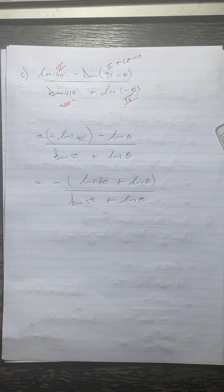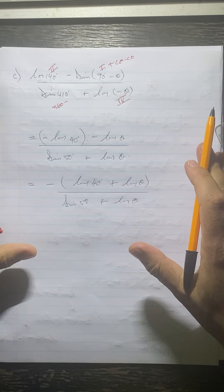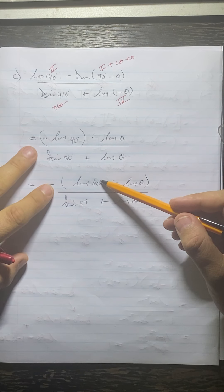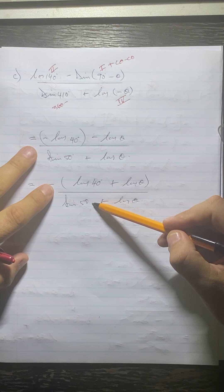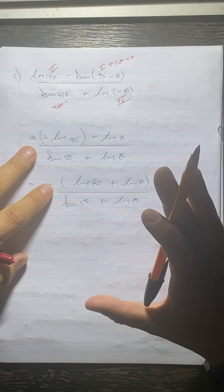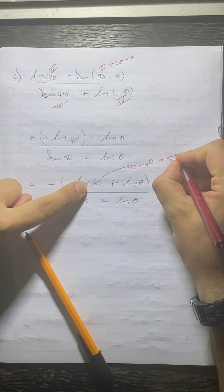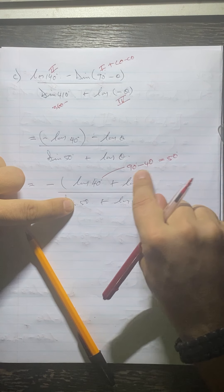At the top I can take out a negative sign as common, so I'm left with negative times cos 40 plus cos theta, all over sine 50 plus cos theta. Now you can see some similarity between the top and bottom. I've got cos theta and cos theta, and then cos 40 and sine 50. If I say 90 minus 40, I get 50 degrees. So 40 plus 50 gives 90, meaning they are co-functions.